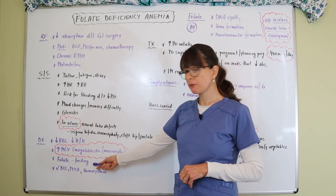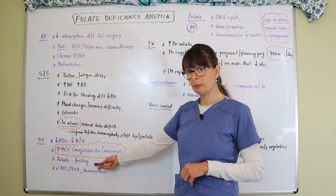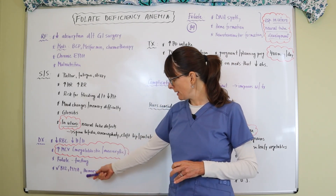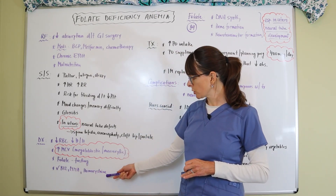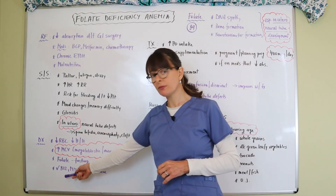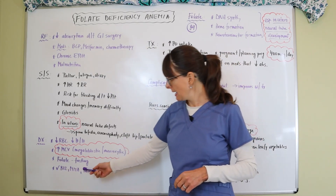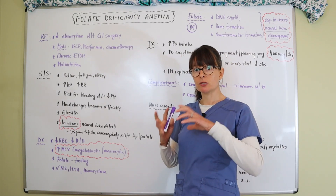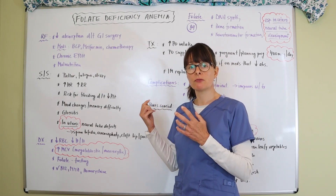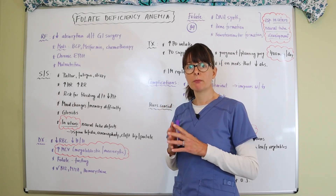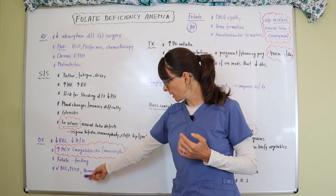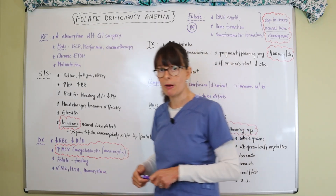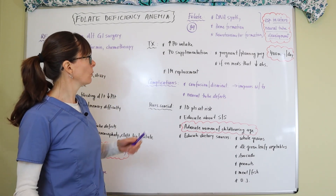We want to check the patient's folate level, which is best done when the patient is fasting. We also want to check B12, MMA, and homocysteine levels, because B12 deficiency is the only other anemia that is also megaloblastic — meaning the cells are big. To distinguish between folate deficiency and B12 deficiency, we need to run both tests along with the associated labs.